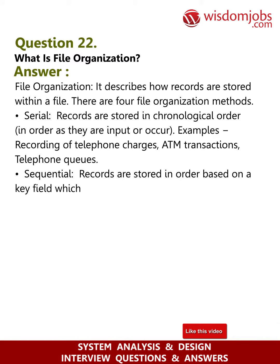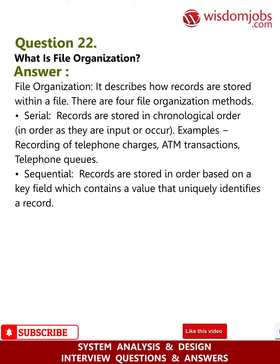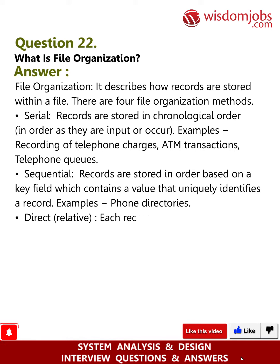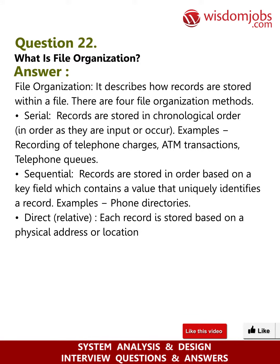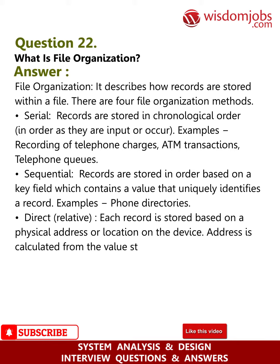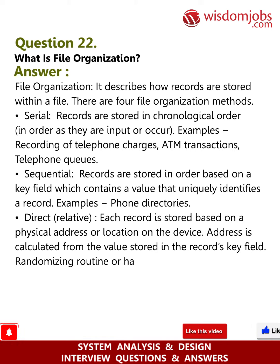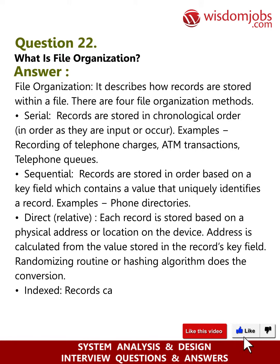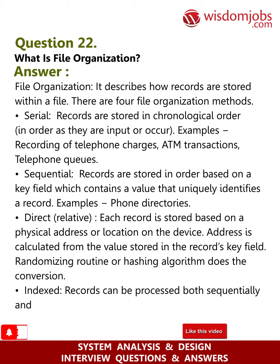Sequential: records are stored in order based on a key field which contains a value that uniquely identifies a record. Examples: phone directories. Direct/Relative: each record is stored based on a physical address or location on the device. Addresses are calculated from the value stored in the record's key field using a randomizing routine or hashing algorithm.